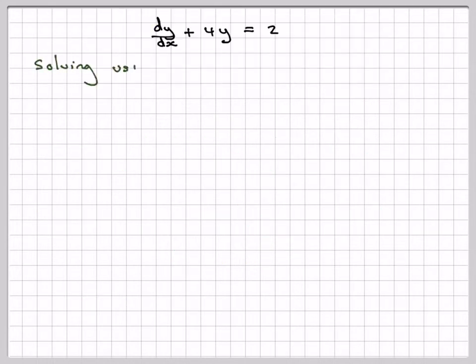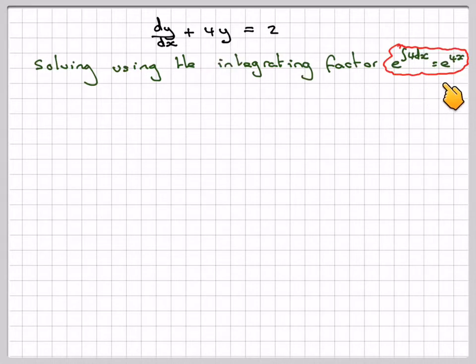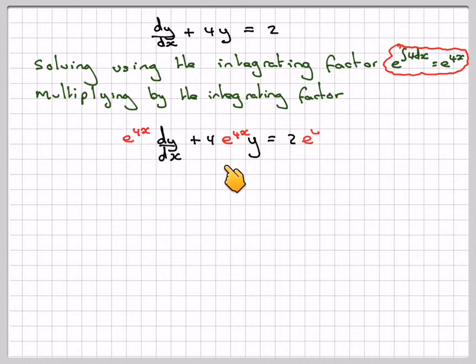Solving using the integrating factor. The integrating factor will be e to the integral of 4 dx, which is e to the 4x. Then multiply the whole thing through by e to the 4x. We're going to get e to the 4x times dy by dx plus 4e to the 4x times y plus 2 times e to the 4x.